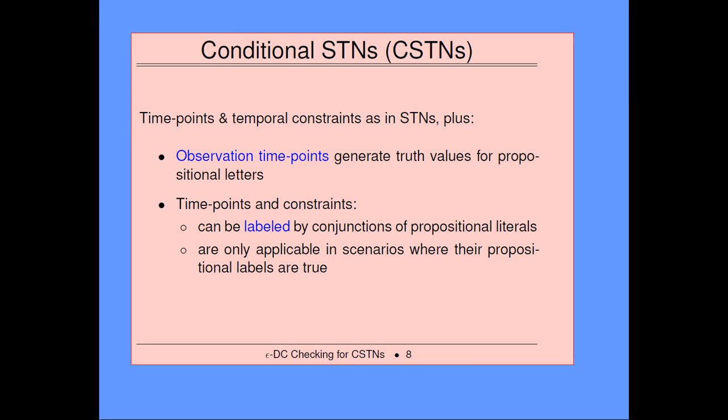With conditional simple temporal networks, introduced by Samardinos et al. in 2002 and 2003, you have the same thing as in STNs but you add observation time points. Each observation time point, when you execute it, generates a truth value for a propositional letter. For example, in a medical domain, you take somebody's blood pressure and get the result that it's either high or low. Depending on those results, you may want to follow a completely different treatment pathway and have different constraints apply. In the CSTN graph, time points and temporal constraints are labeled by conjunctions of propositional literals, and they are only applicable in scenarios where their labels are true.